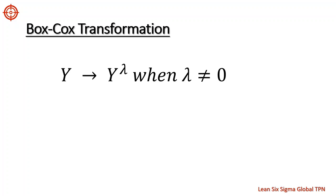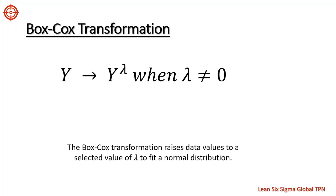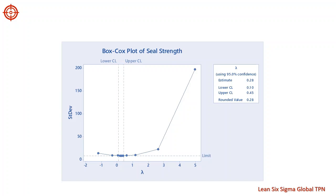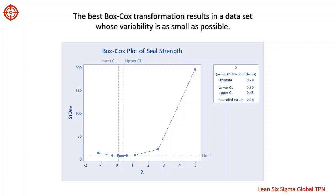The Box-Cox transformation works by raising each value to a power between minus 5 and 5. This value is called lambda. Note that a special case applies when lambda is 0 — here we take the natural log of each value. Let's use Box-Cox transformation to try to transform the non-normal seal strength data of nut bags. The goal is to find a lambda that transforms our non-normal data to normally distributed data.